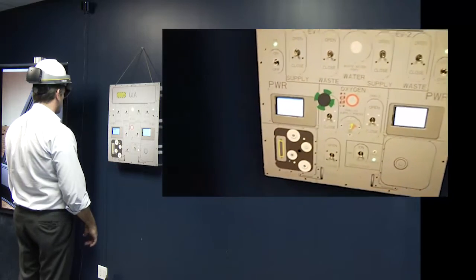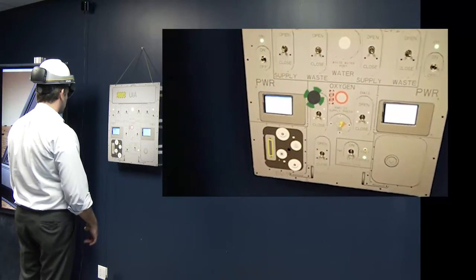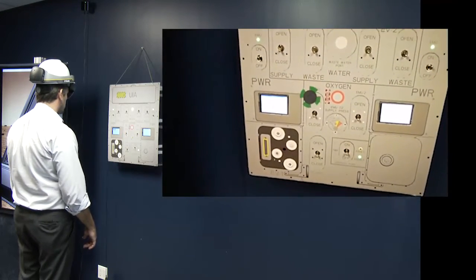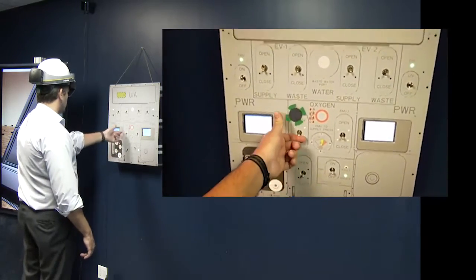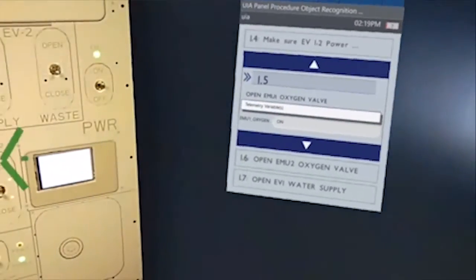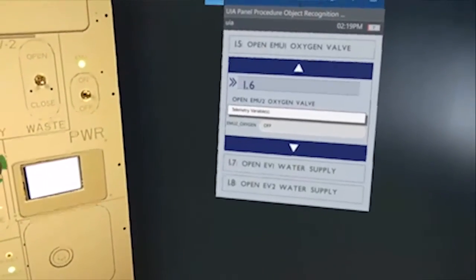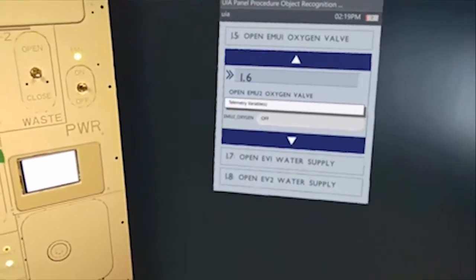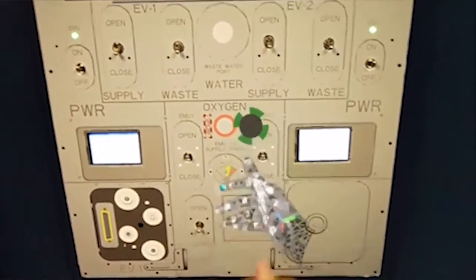Alright, this is very important. We want to make sure that we turn on oxygen and get oxygen to our astronaut supply suit. It tells me to go ahead and open that up. Now it takes me to the next procedure 1.6, open EMU2 oxygen valve. Again, forward leading.